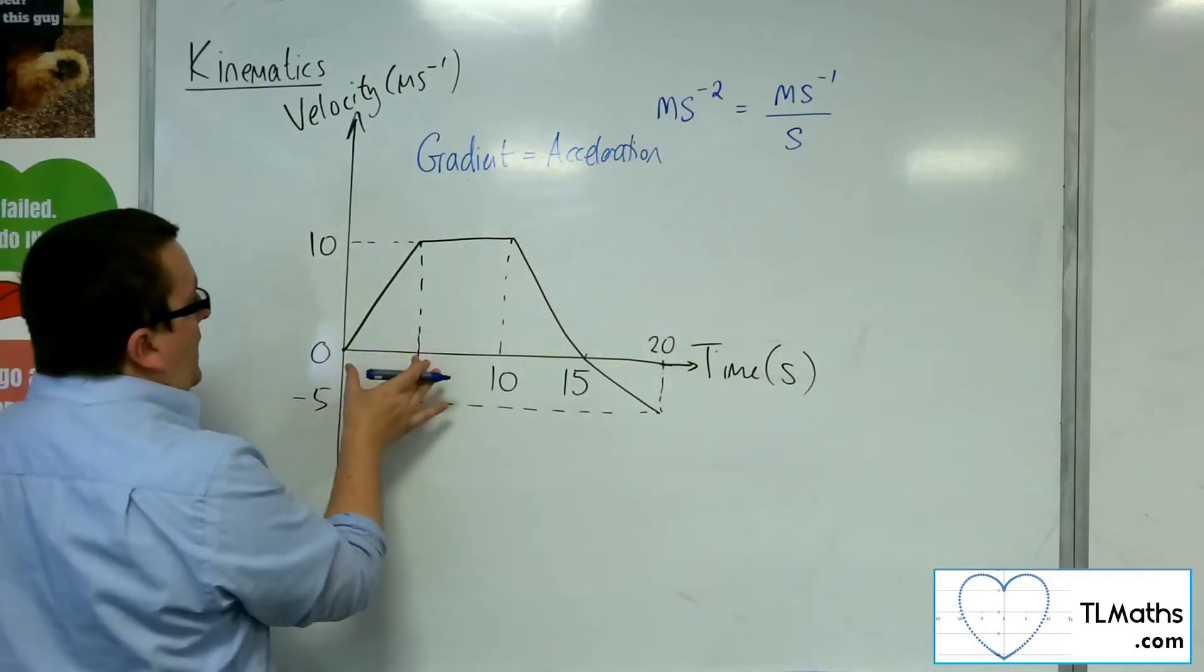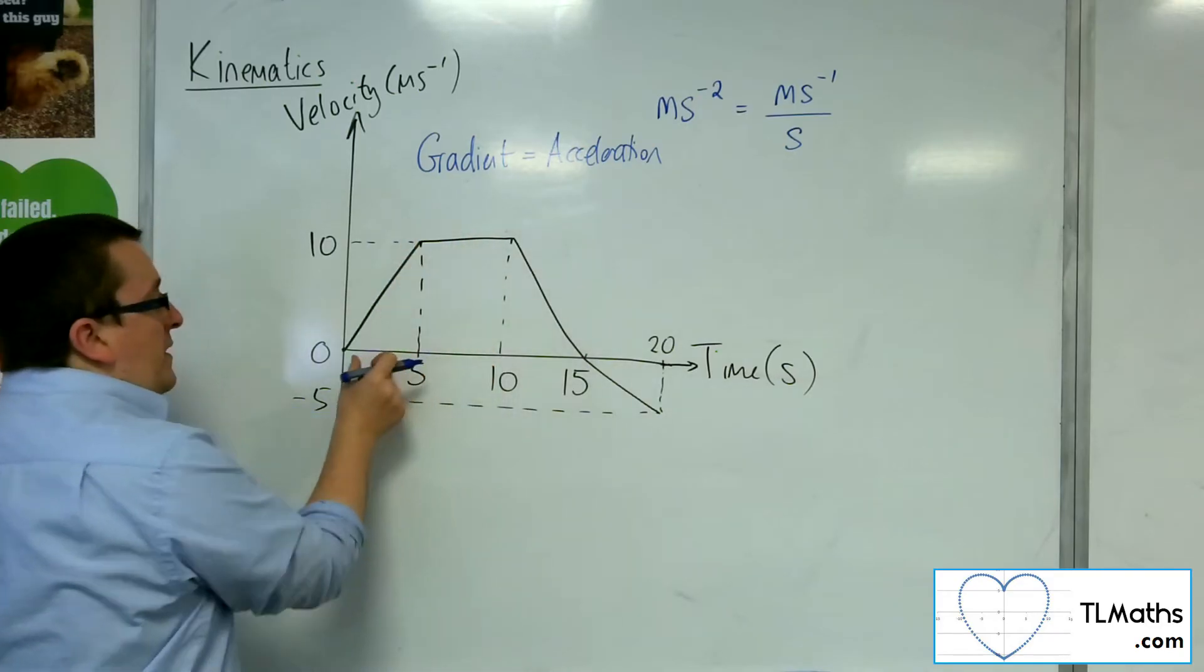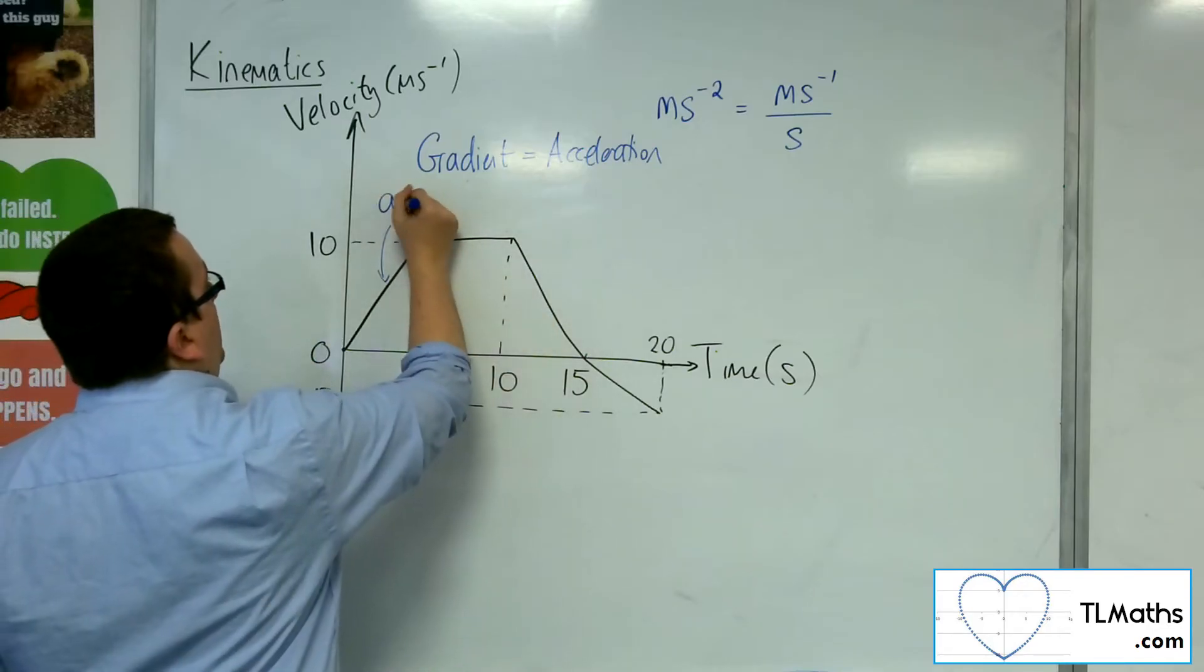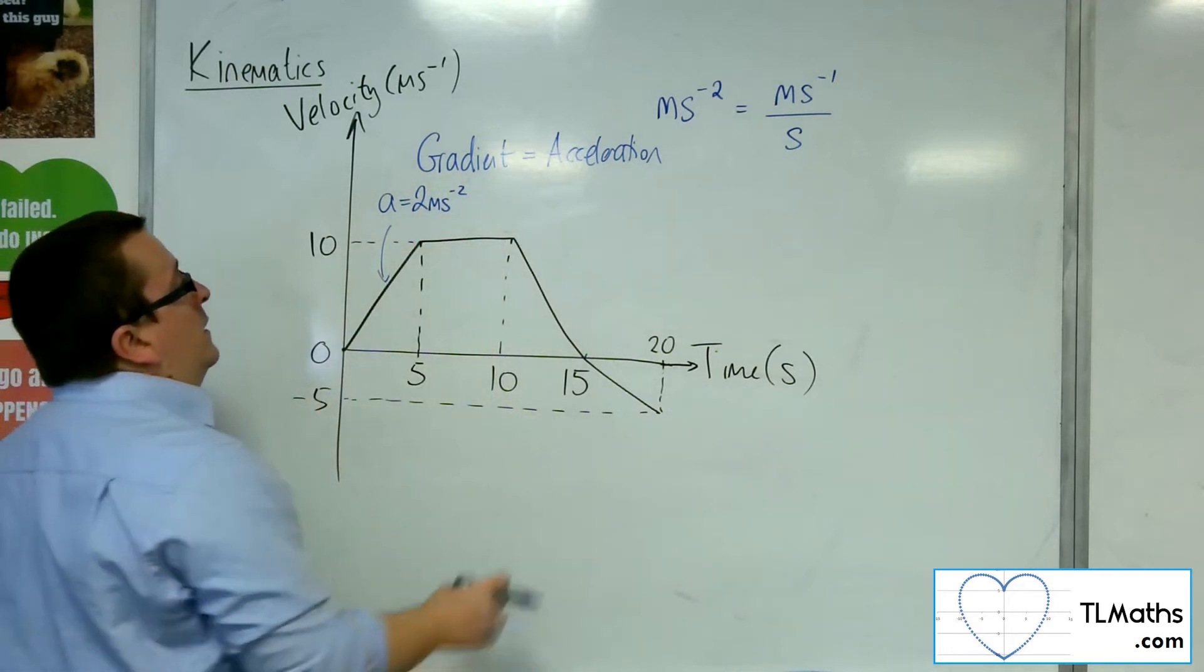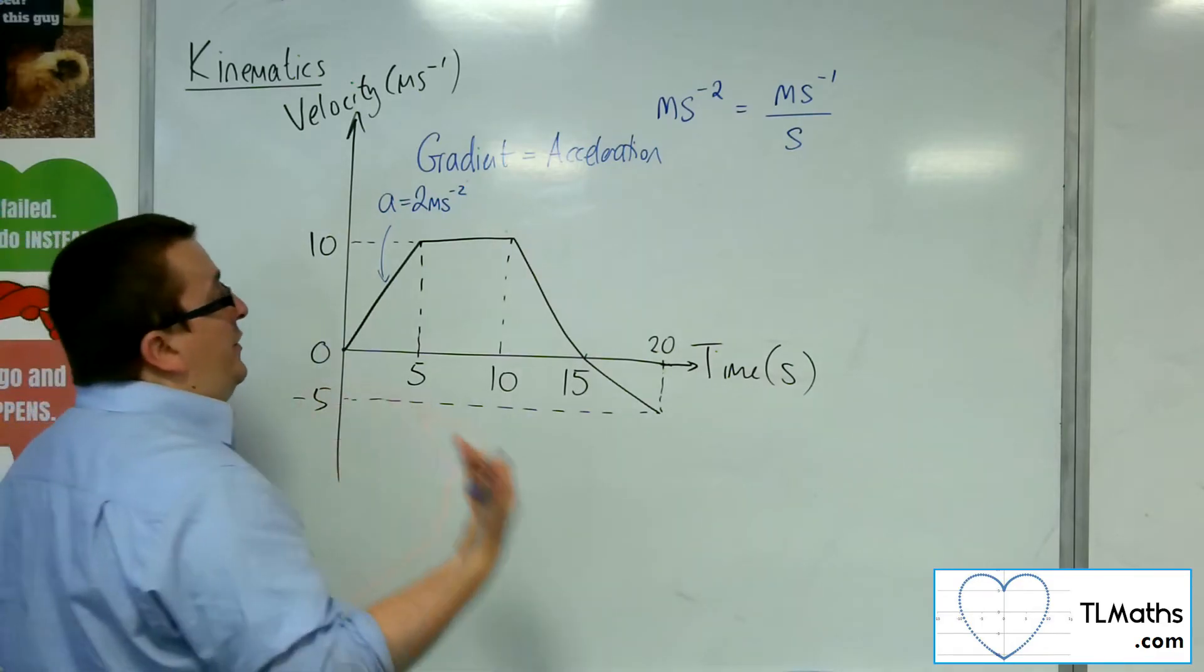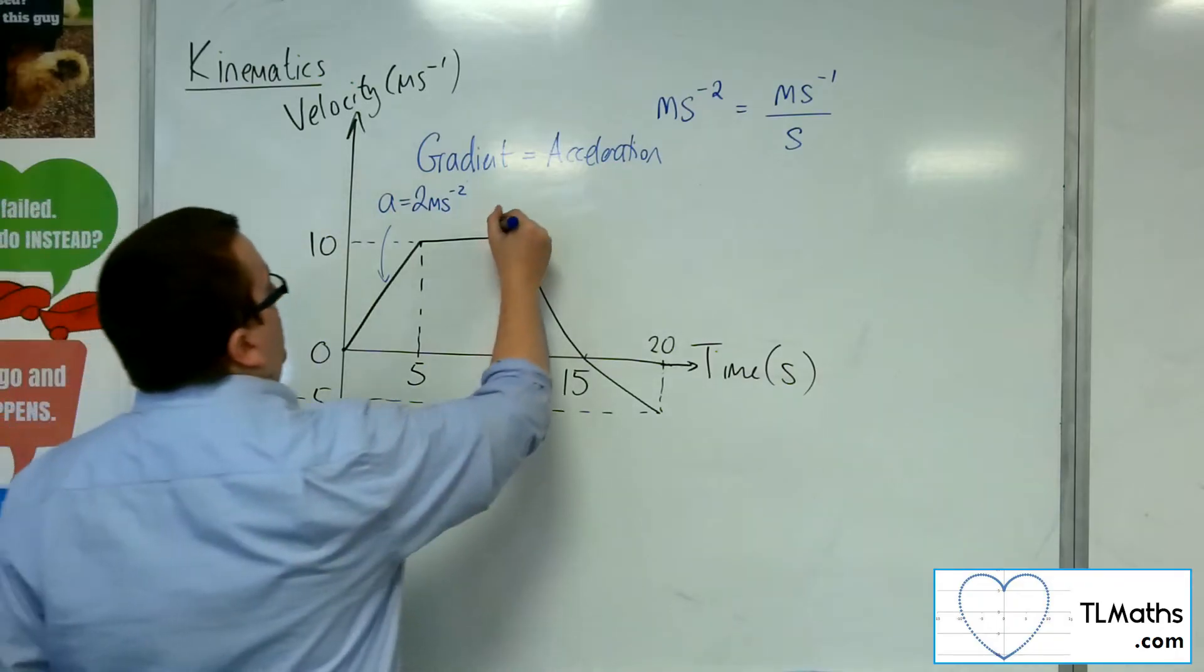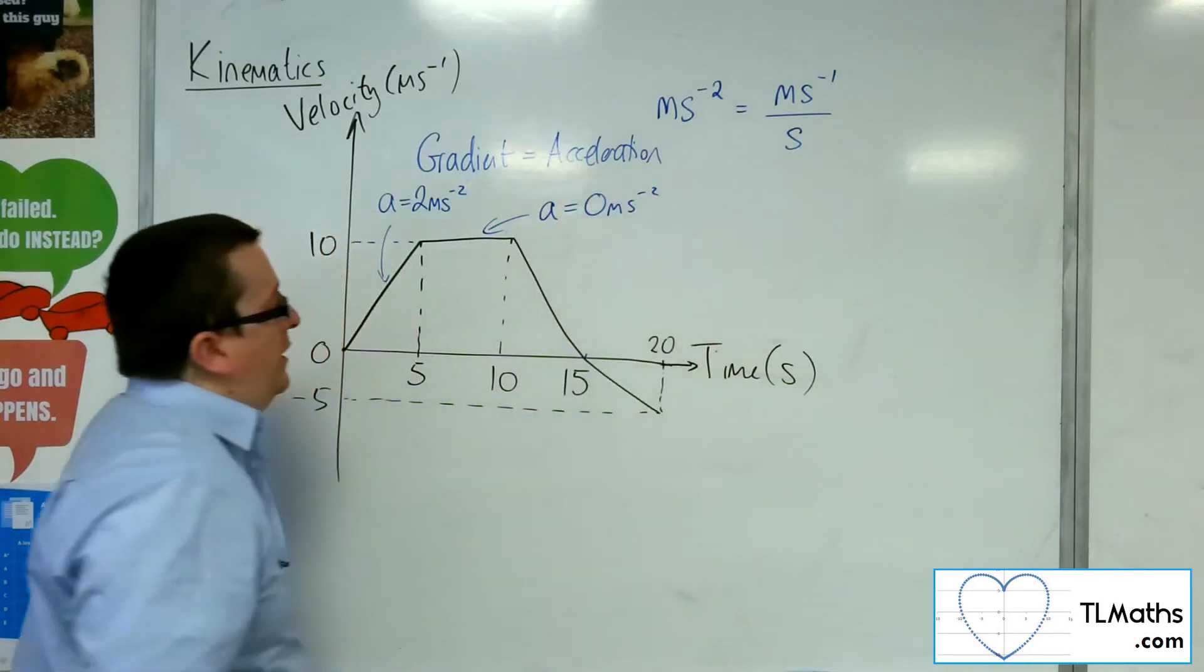So for the first five seconds, we've got the difference in the y, 10, divided by the difference in the x, 5. So 10 divided by 5 is 2. So the gradient for the first five seconds is 2 metres per second per second. For the next five seconds, between 5 and 10 seconds, the acceleration is 0 because the change in velocity is 0. Velocity is unchanging. So the acceleration here is 0 metres per second per second.